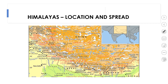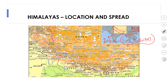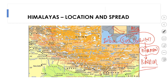Himalayas are found in the Asian continent, to the northern portion of the Indian subcontinent. India is referred to as a subcontinent because it is separated from the rest of Asia by the Himalayan mountain chain. The Himalayan mountain chain forms a formidable barrier to the cold winds coming from the Asian portion, which is why India's climate is contrastingly different from the rest of Asia.